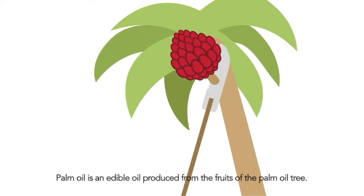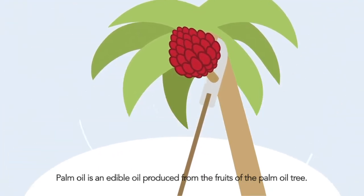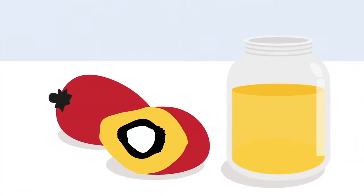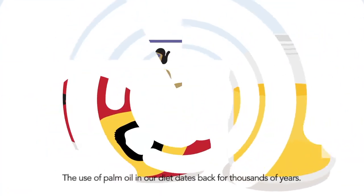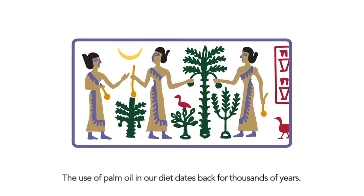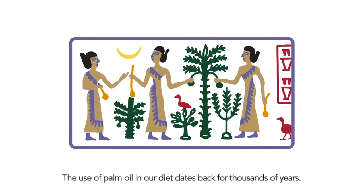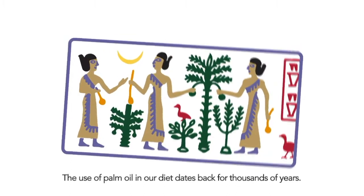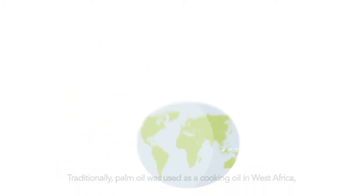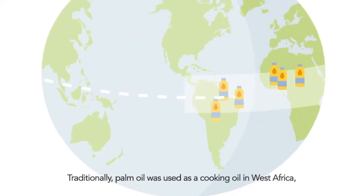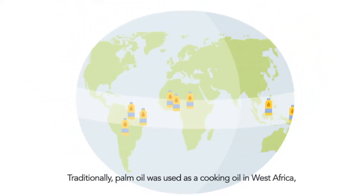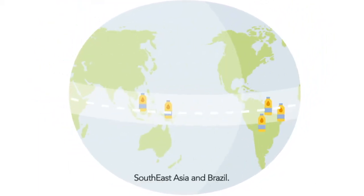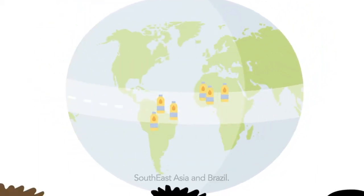Palm oil is an edible oil produced from the fruits of the palm oil tree. The use of palm oil in our diet dates back for thousands of years. Traditionally, palm oil was used as a cooking oil in West Africa, Southeast Asia and Brazil.